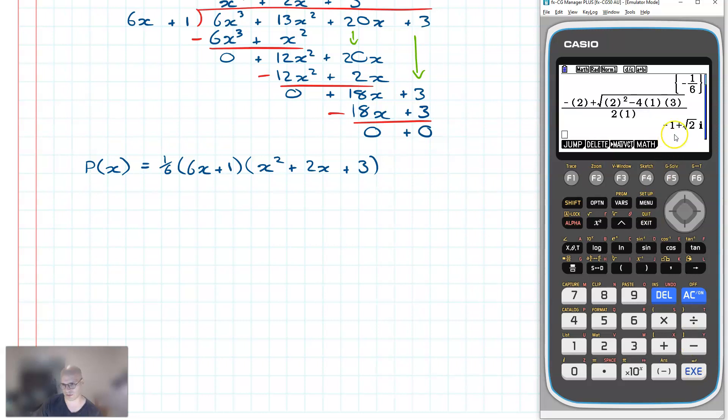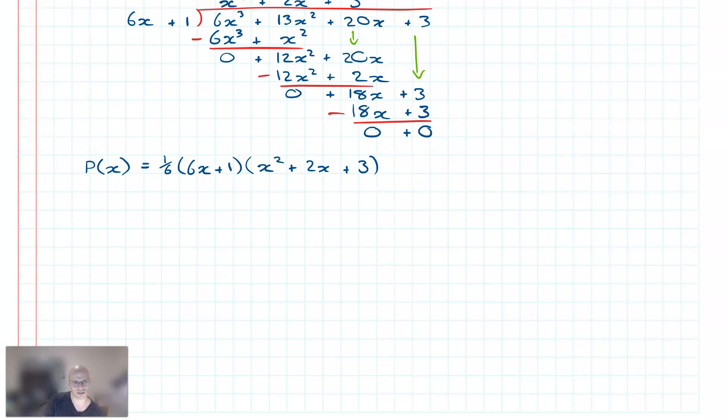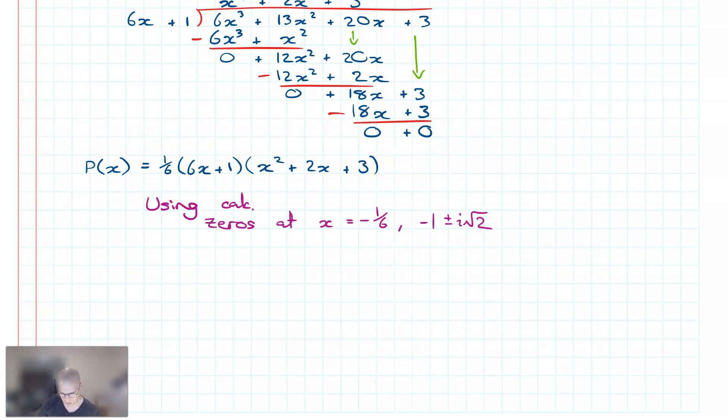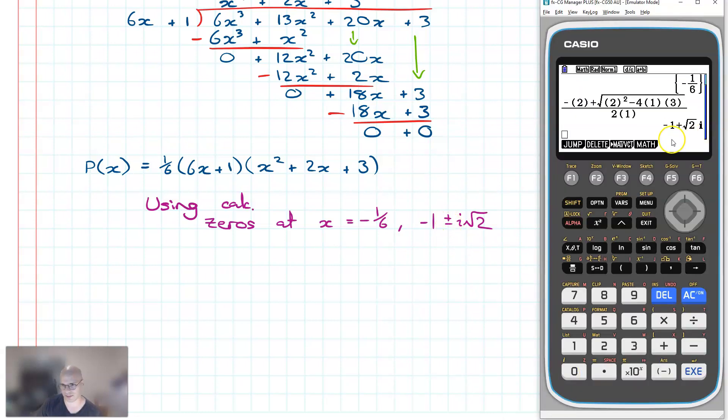Going again, we have our first root. So we have, the zeros are at, I should actually say using calc, zeros are at x = -1/6. Next one was -1 + i√2. And of course, based on the complex conjugate law, we know that if this is a root, then similarly we also have to have the complex conjugate, so -1 - i√2. So these are our roots or our zeros.